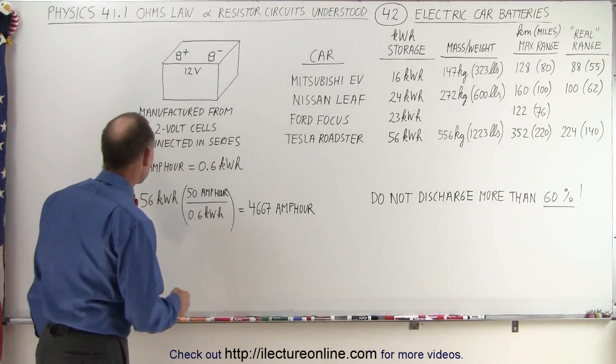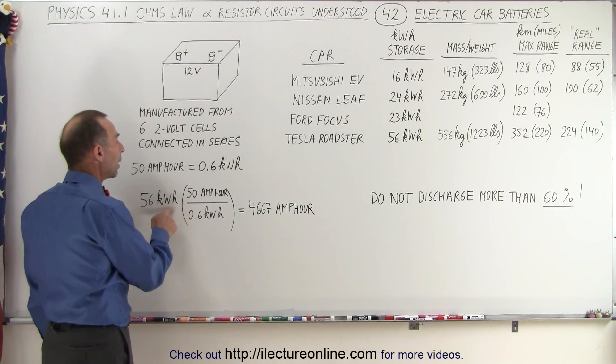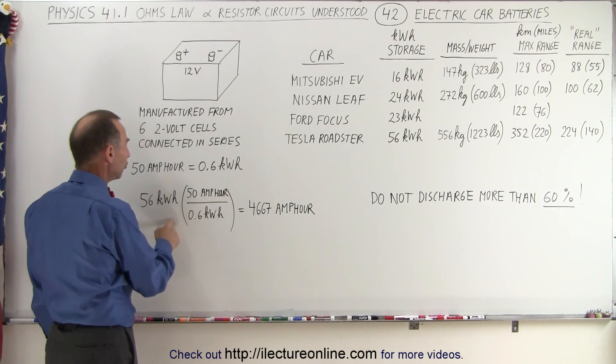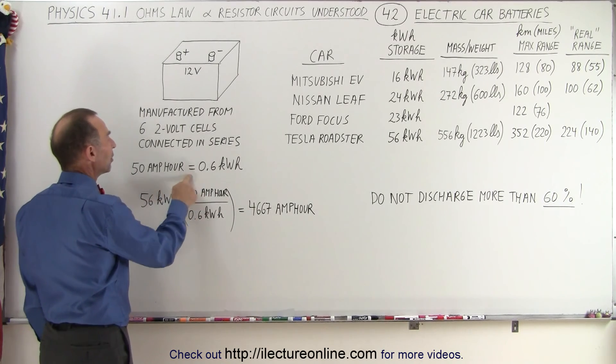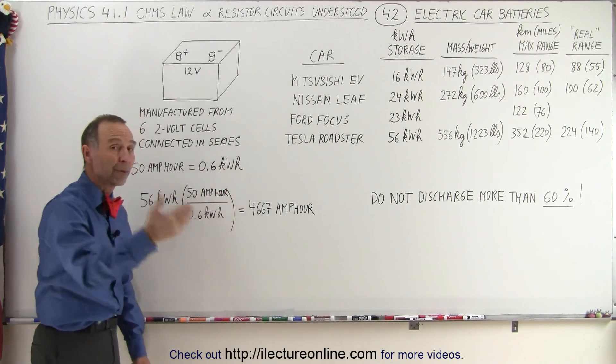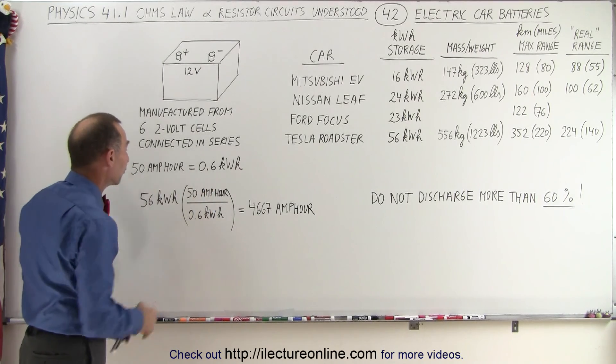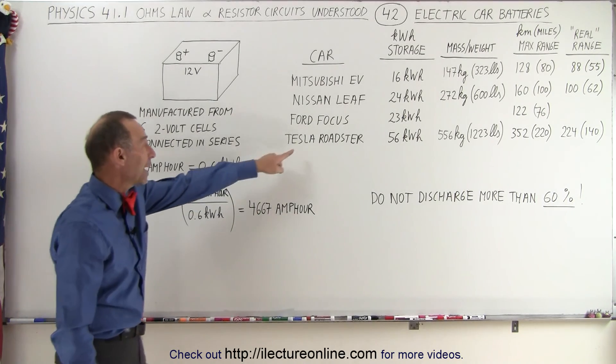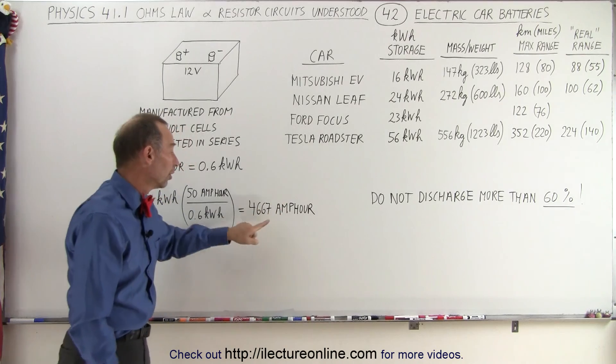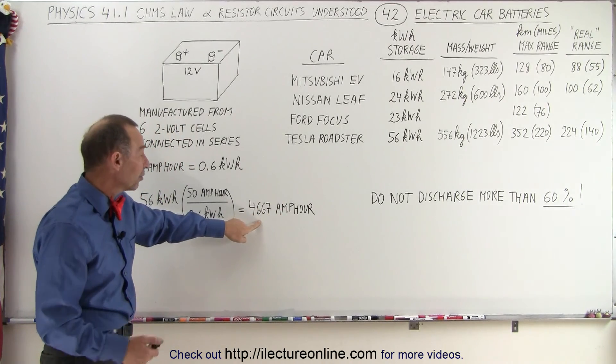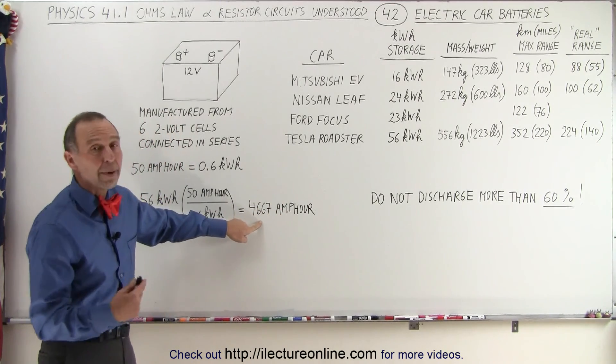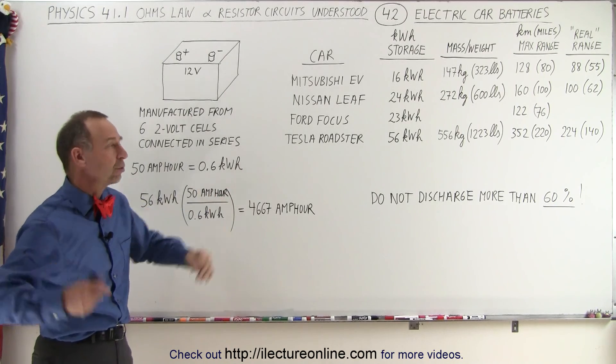Now if we convert 56 kilowatt hours in terms of amp hours, notice we know that 50 amp hours is equal to 0.6 kilowatt hours from a previous video. So when we do the conversion, notice that the battery of the Tesla Roadster can contain 4,667 amp hours of energy. That's an enormous quantity.